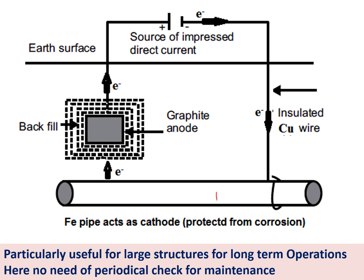If you want to protect this iron rod — the base metal — it would normally act as an anode. But to protect it, you need to connect it to the negative terminal of the battery. From the negative terminal, electrons flow from the battery to the base metal, so the base metal is accepting electrons from the battery. Previously the base metal accepted electrons from magnesium or zinc; now we are sending electrons from the battery instead. Since it is accepting electrons, it acts as a cathode.